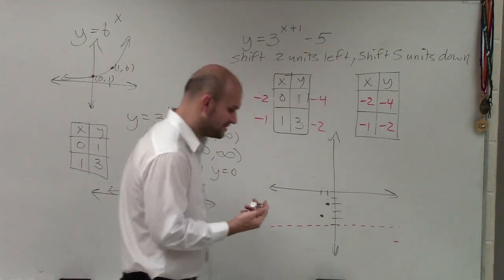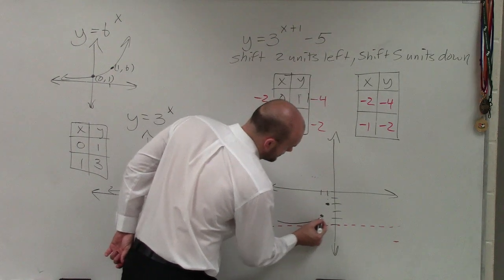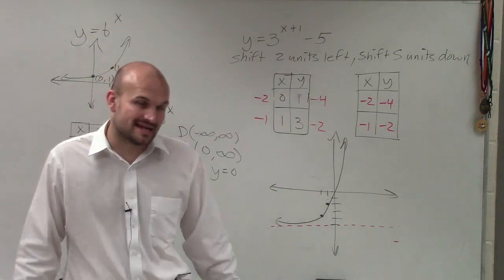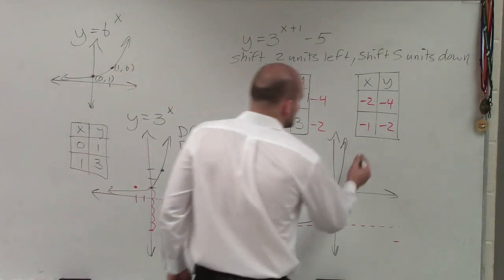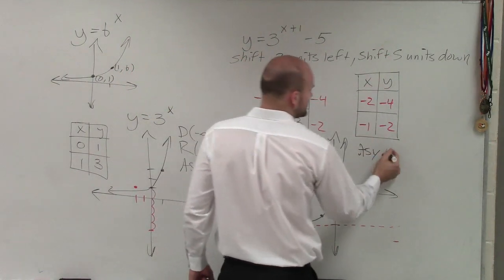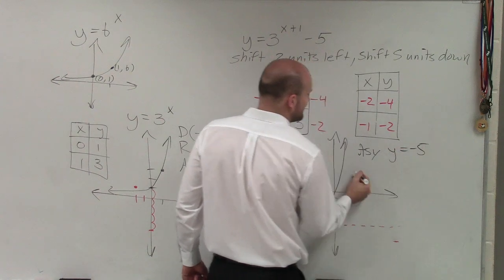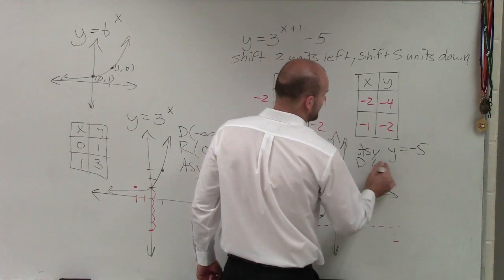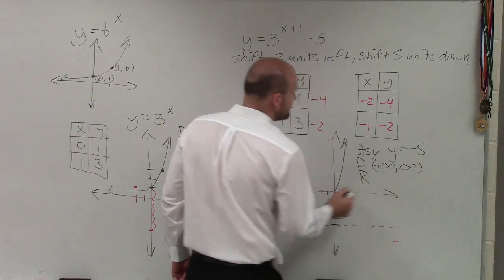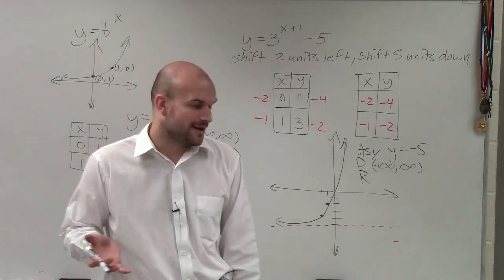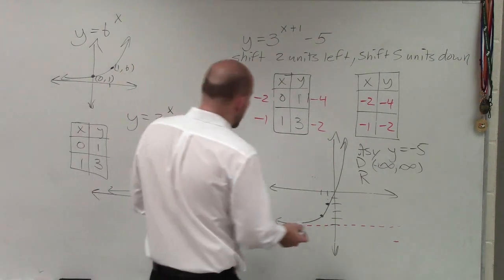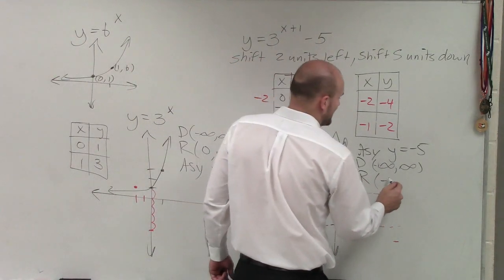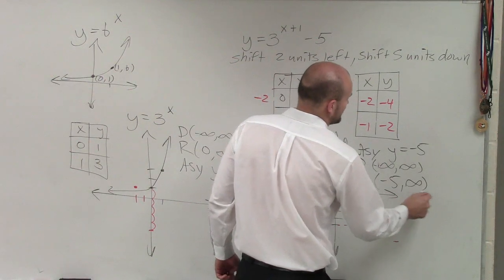And now what I'm simply going to do is now just connect this to go through. But changing my asymptote is going to affect now not only the asymptote, as now I can say my asymptote has now been shifted down five units, so it's now y equals negative 5. It's not going to affect my domain, which is my x values, which would be from negative infinity to infinity. However, it is going to affect my range. Because now my range is not just going to be only positive numbers, but now it's going to go all the way down to negative 5. So my range is from negative 5 to infinity.